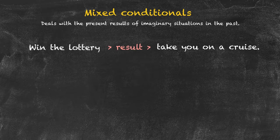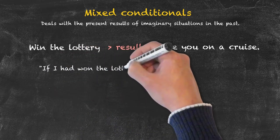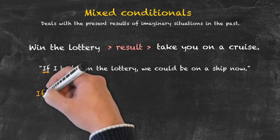The present result might be that we are on a cruise ship now. If I had won the lottery, we could be on a ship now. Let's have a look at the structure of this particular conditional: if plus the past perfect.